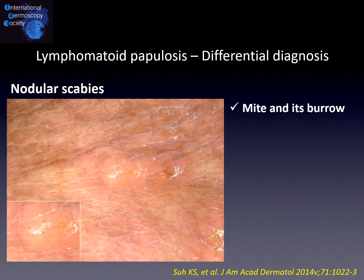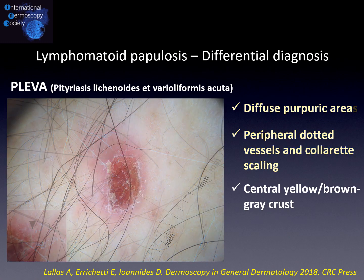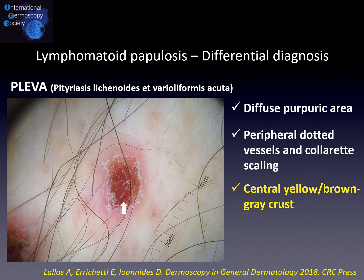Nodular scabies is easily differentiated from lymphomatoid papulosis by detecting mites and burrows, which are very well visible on dermoscopy examination. The situation is different for PLEVA, because it typically displays dermoscopic findings which are also seen in lymphomatoid papulosis, including diffuse purpuric areas, peripheral dotted vessels, collarette scaling, and central yellow-brown-grey crust. So clinical, anamnestic data, and histological examination remain the only aids for the definitive differential diagnosis between PLEVA and lymphomatoid papulosis.